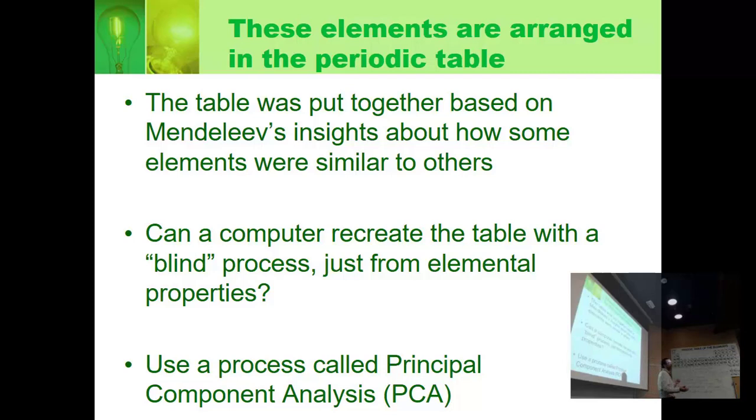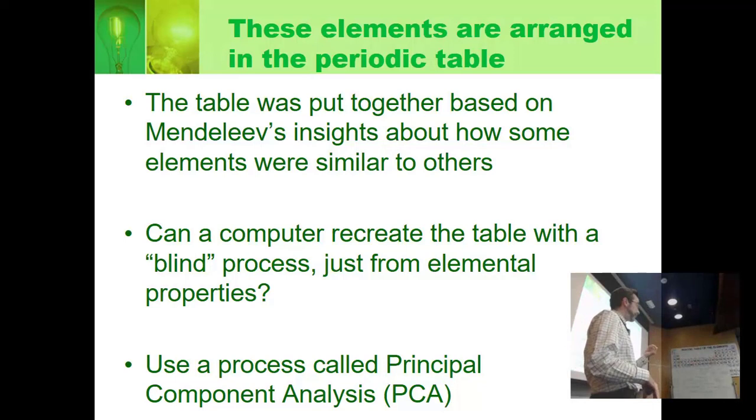Mendeleev did that based on limited data 150 years ago. What if we took the same data today and gave it to a computer? We've collected more accurate data, the same type of data Mendeleev had: melting points, boiling points, ionization energies. What if we gave it to a computer and asked it to remake the periodic table? Would we come up with the same thing if the computer is completely blind to anything but the data? To do this we use a process called principal component analysis or PCA.